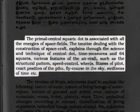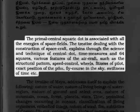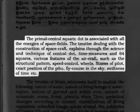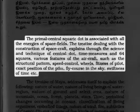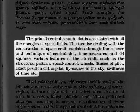It reads: the primal central square dot is associated with all the energies of space fields. The treaties dealing with the construction of spacecraft explain through science and technique of central dot, time measures, and 64 squares. Various features of the aircraft, such as the structural pattern, speed control, wheels, fitness of pilot, exact position of pilot, fly course in the sky, swiftness of time, etc.